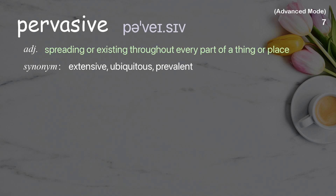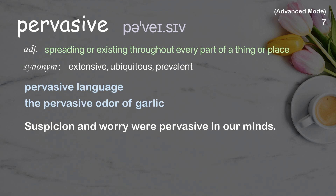Pervasive: spreading or existing throughout every part of a thing or place. Examples: pervasive language, the pervasive odor of garlic. Suspicion and worry were pervasive in our minds.